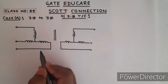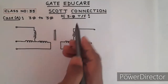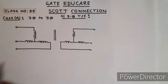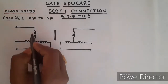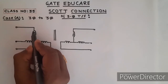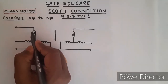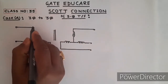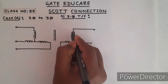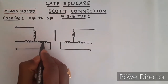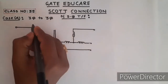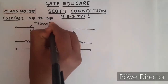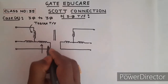Welcome to Gate Educare. Today in this tutorial, the Scott connection of a three-phase transformer will be explained. For a three-phase to three-phase Scott connection, two transformers are needed. One transformer is called the TZ transformer and the other is called the main transformer. Each has a primary and a secondary winding.